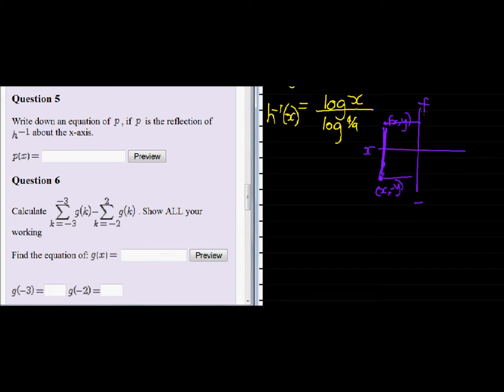So that means that P of x is equal to the inverse Hx, but the y-value, and this represents the y-value, is multiplied with a negative 1. So all we do is have a negative 1 times and then the log that we have, or Hx is log of x over log of 4 over 9.